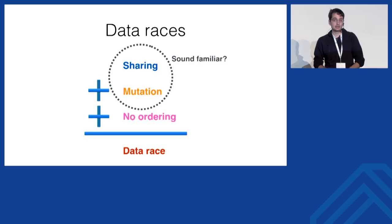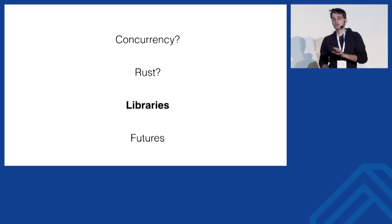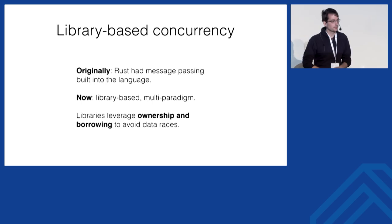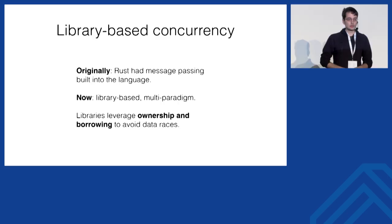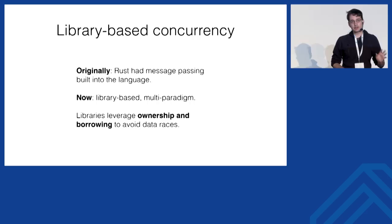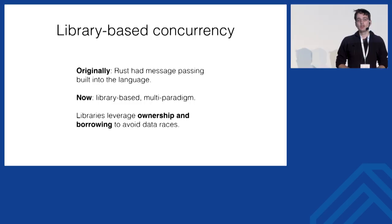Now I'll dive into the concurrency primitives that Rust has and how they leverage ownership and borrowing to give you safe management of the machine. The key thing to know is that Rust's concurrency is all baked into libraries, not the language itself. Historically we had message passing baked into the language, but we removed all that — now everything is in the standard library or the Rust ecosystem, purely leveraging ownership and borrowing to give you ironclad safety guarantees.